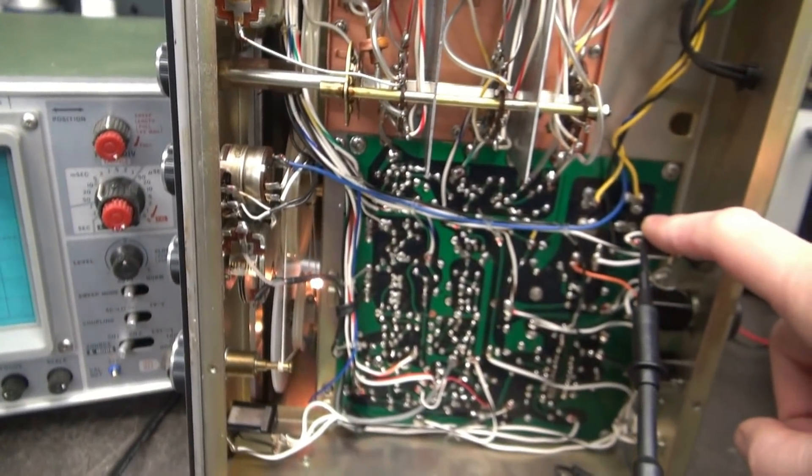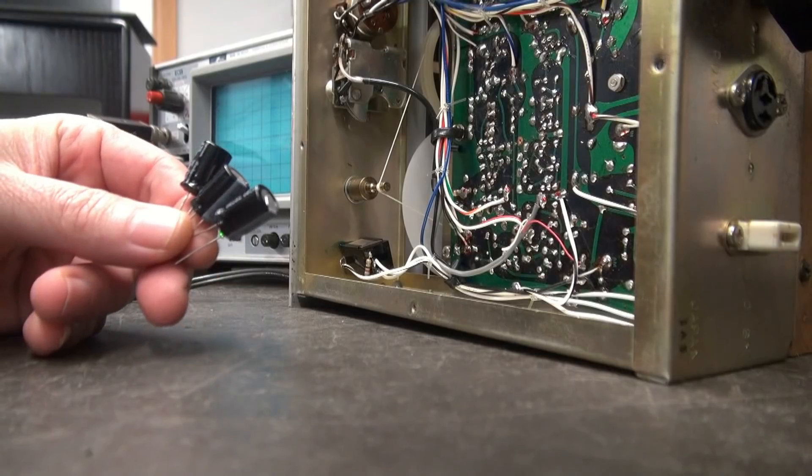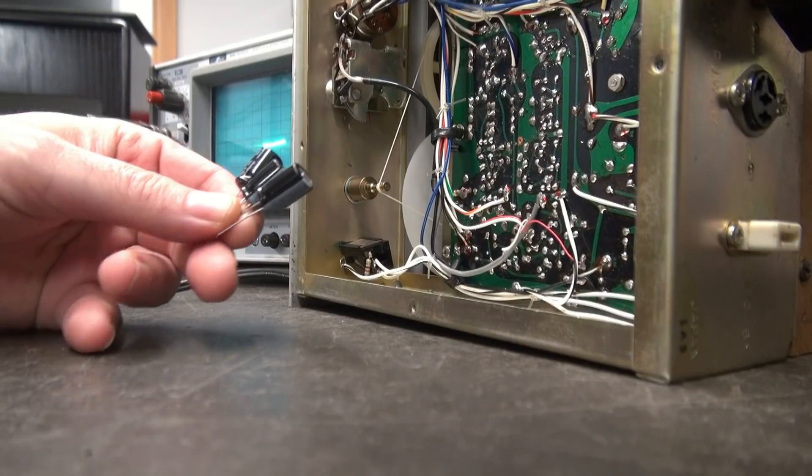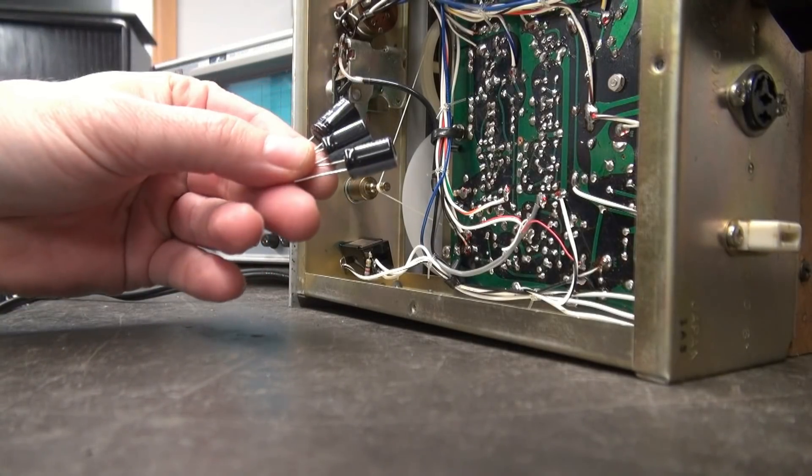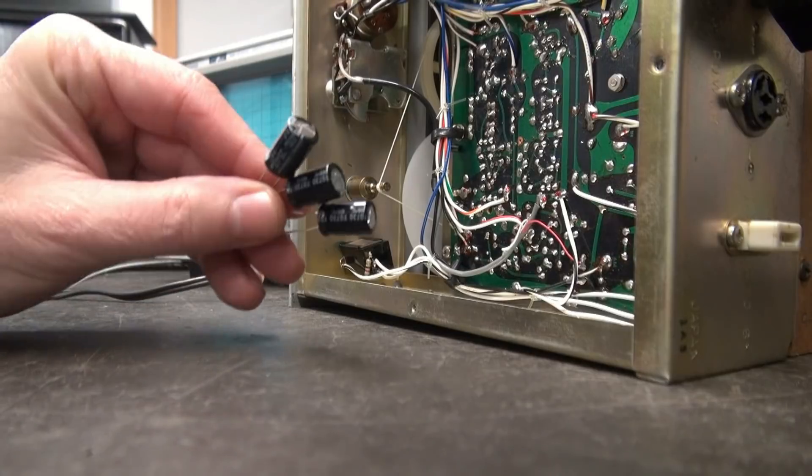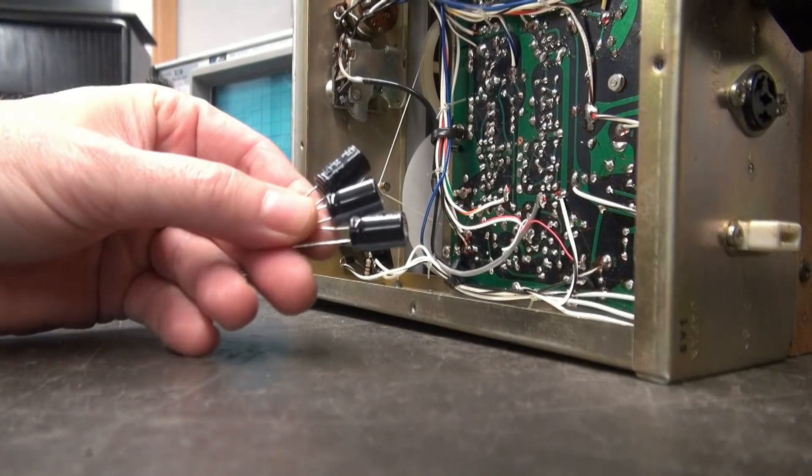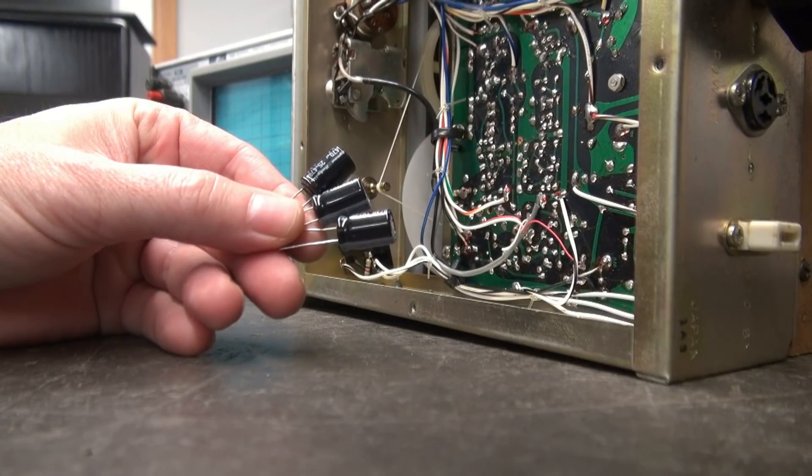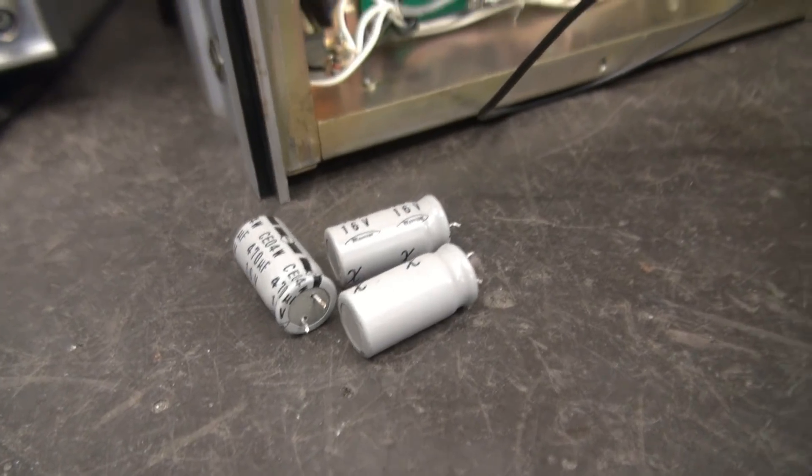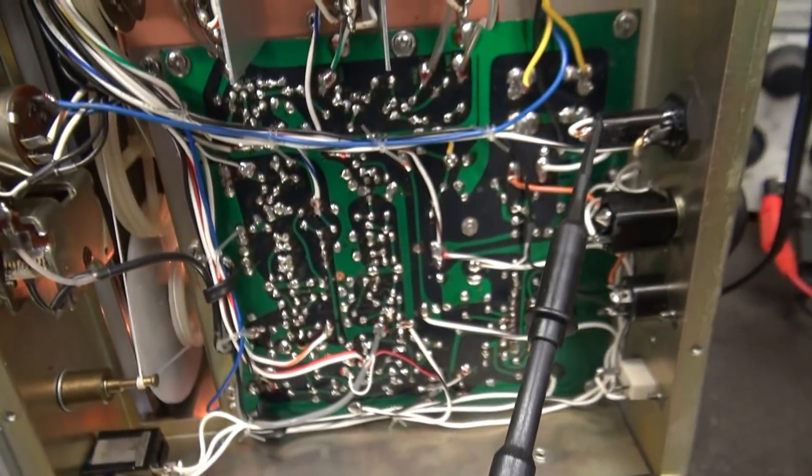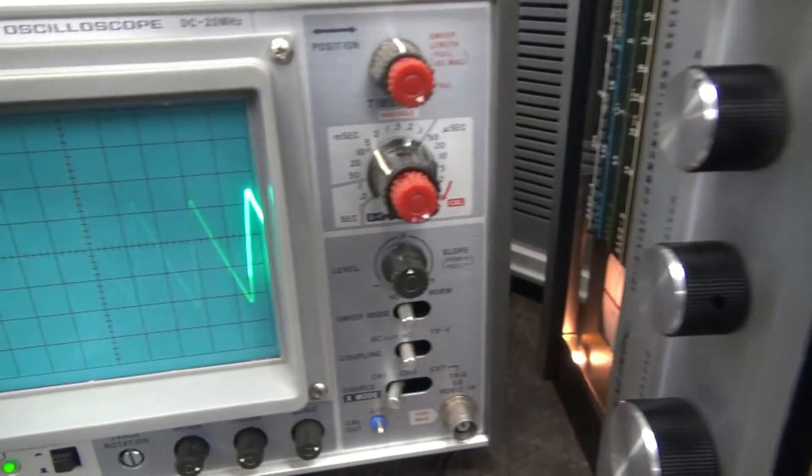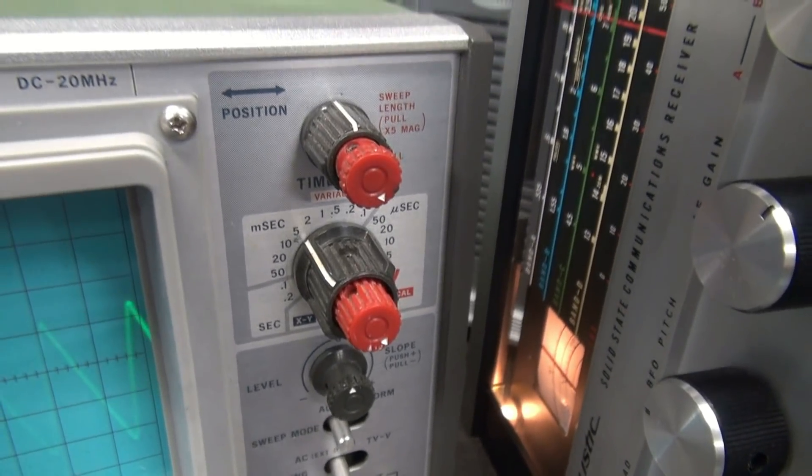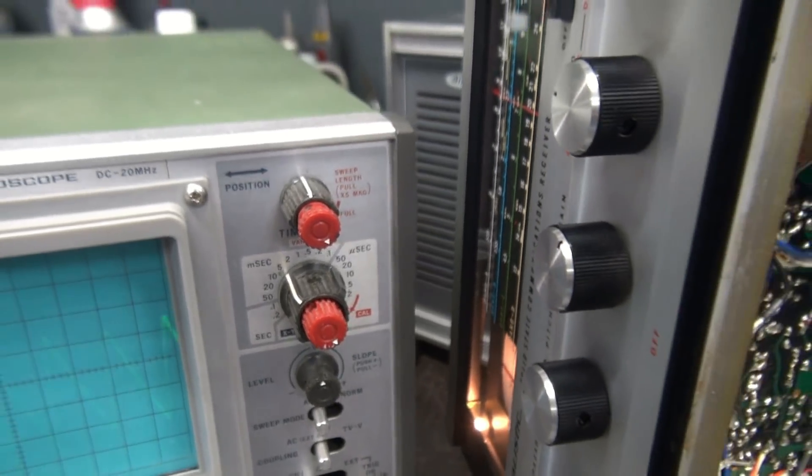So first step, let's change the filter caps. There's actually three of these 470 microfarad caps in here rated at 16 volts. And I have three new 470 microfarad caps rated at 25 volts. So we'll swap those out and put the scope back on the power supply and see if that decreases the hum amplitude. So there's the old caps. New caps are in. The scope is hooked back up. Guess what? No change. Still have the hum. Still have the buzz coming out of the speakers. So what's the next step? How about we put a choke in that power supply?